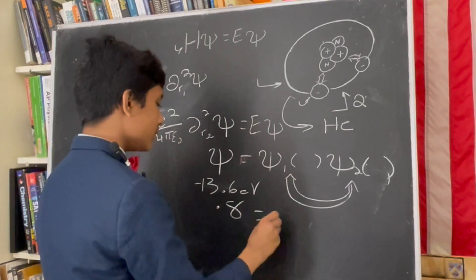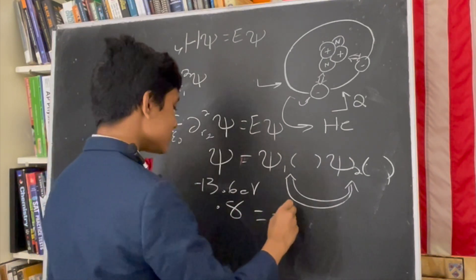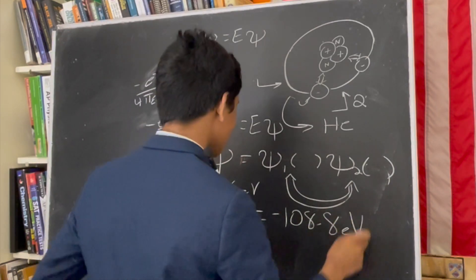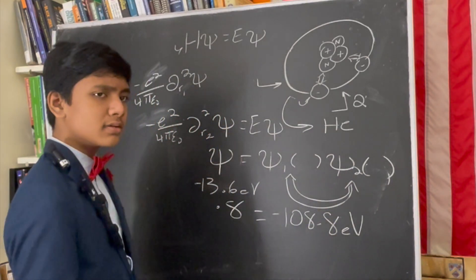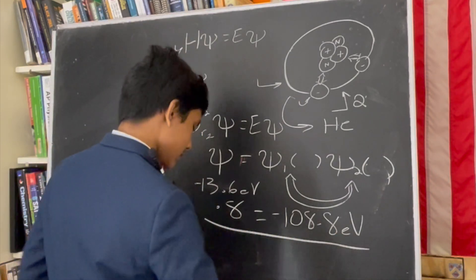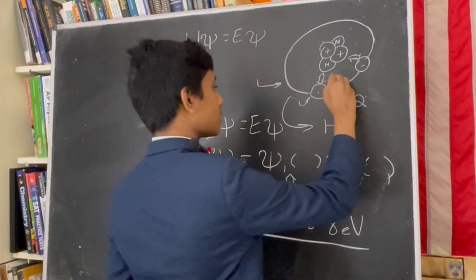But when we do this, we get minus 108.8 electron volts. So what went wrong? Well, here's the thing. There is a third relation.